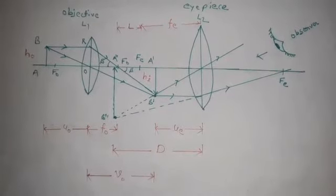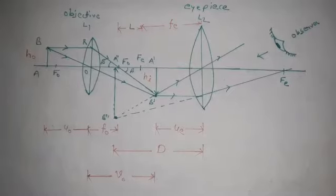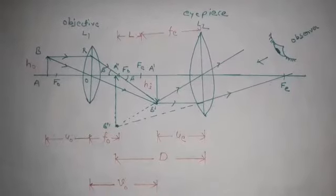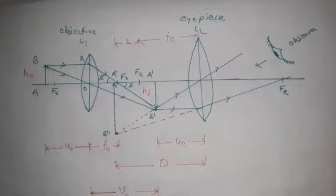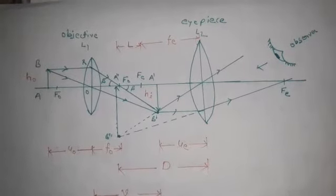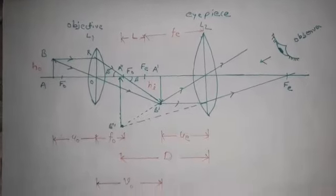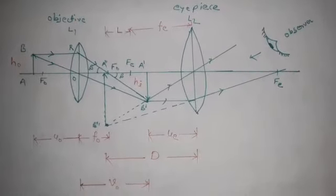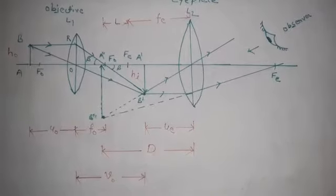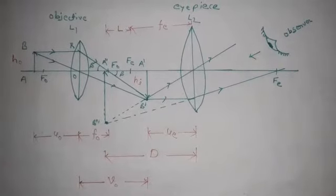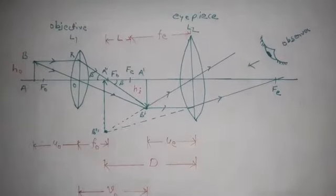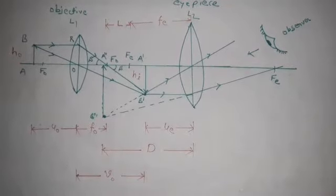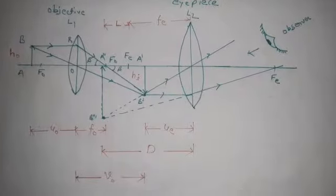So let's start with some basic concepts. As we discussed in the simple microscope lecture, we covered the structure, ray diagram, angular magnification, and distinct vision. Here we will discuss the compound microscope. The key points are: the theory of the compound microscope, its working, the ray diagram, and the angular magnification or magnifying power.